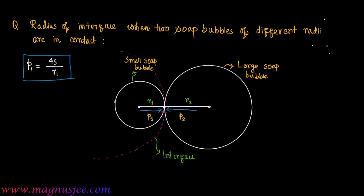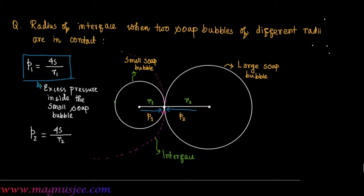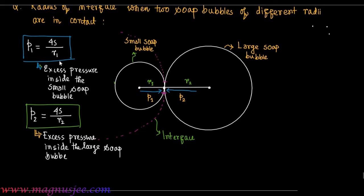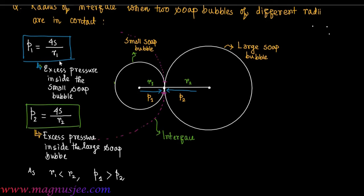p1 is equal to 4s divided by r1, which is the excess pressure acting inside the small soap bubble of radius r1. Similarly, p2 is equal to 4s divided by r2, which is the excess pressure inside the large soap bubble. Since r1 is less than r2, we have p1 greater than p2.